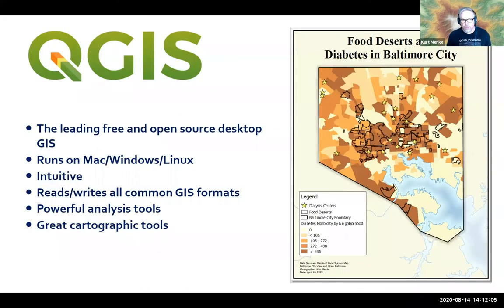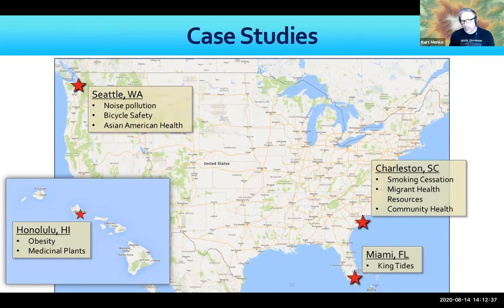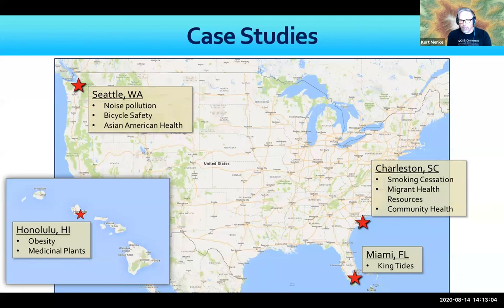Today we're focusing on QGIS — the leading free and open source desktop GIS that runs on Mac, Windows, and Linux. It's generally pretty intuitive, reads and writes a huge number of GIS formats, and has powerful analysis and cartographic tools. Normally I go through a suite of case studies, but today I'll focus on the Miami, Florida king tides example. All case studies are tagged on the Community Health Maps blog.